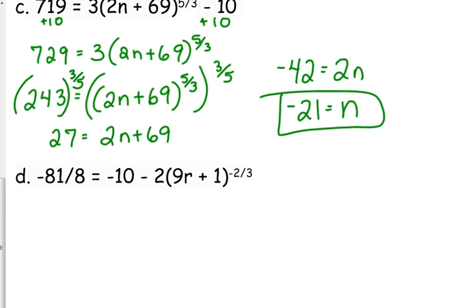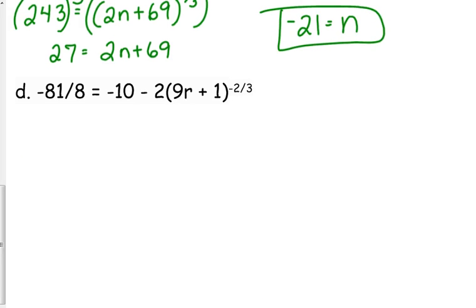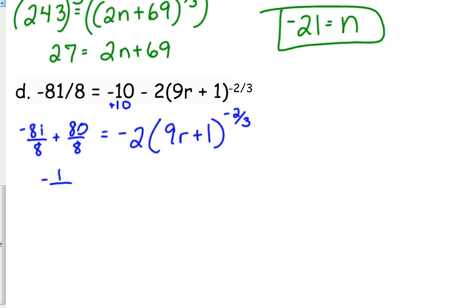Let's do one more with fractions. Negative 81 over 8, we're going to solve this one. We need to start by adding 10 to both sides. If we're going to do this without a calculator, we need to express 10 as something over 8, that would be 80 over 8. Negative 81 plus 80 is negative 1, so that equals negative 1 over 8. We need to multiply both sides by negative 1 half now.